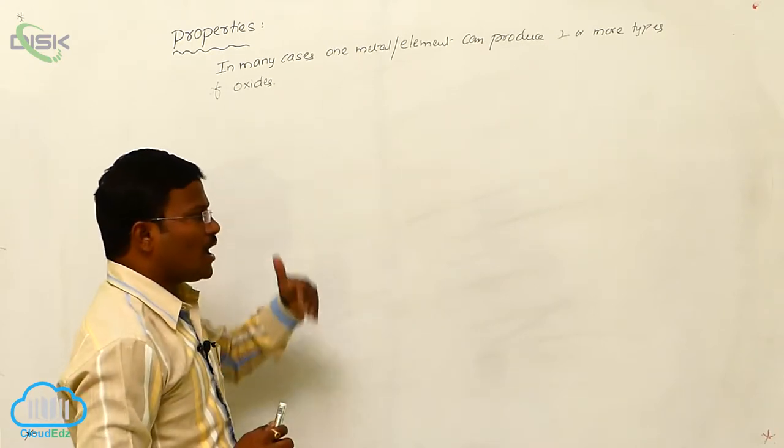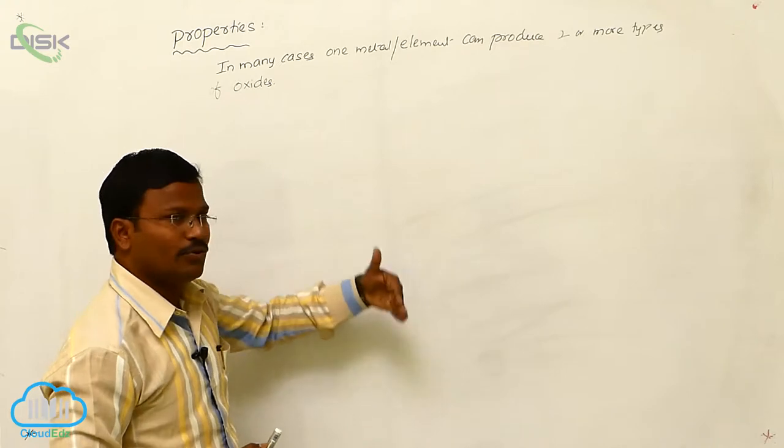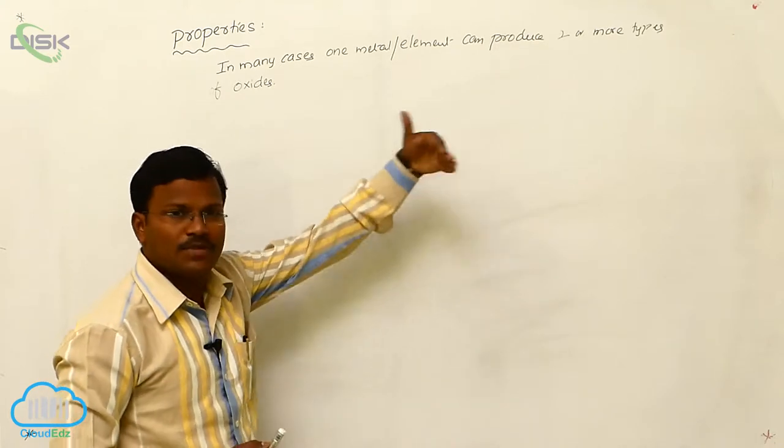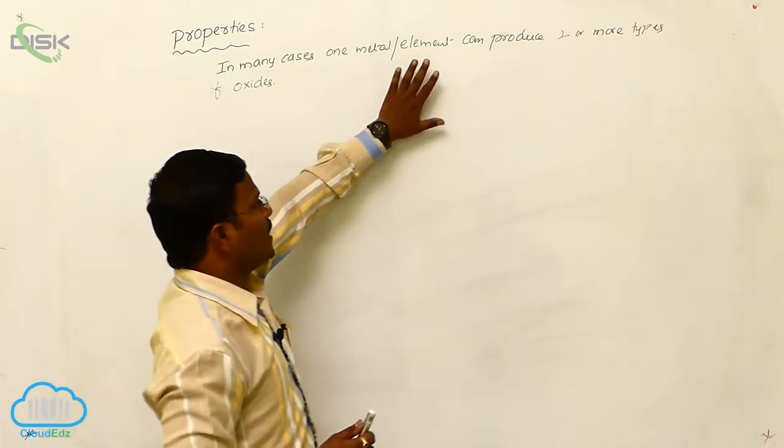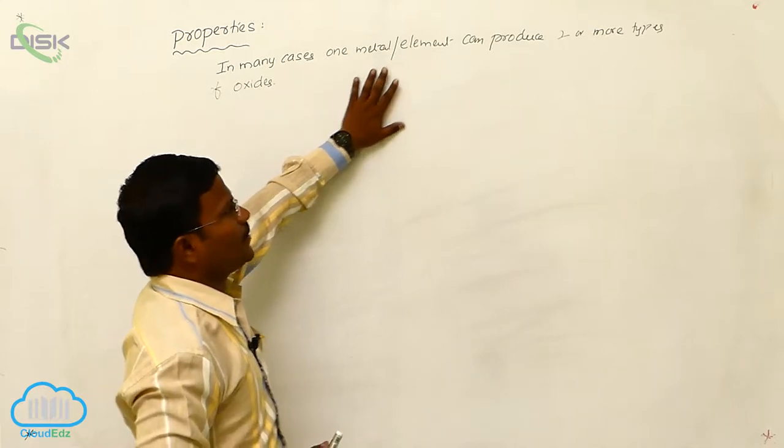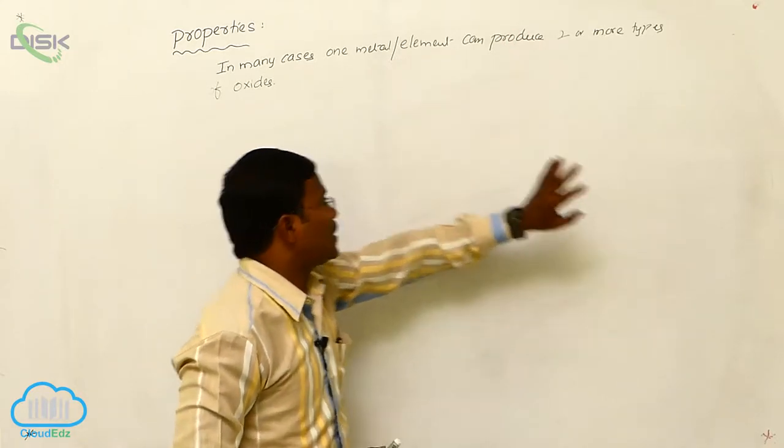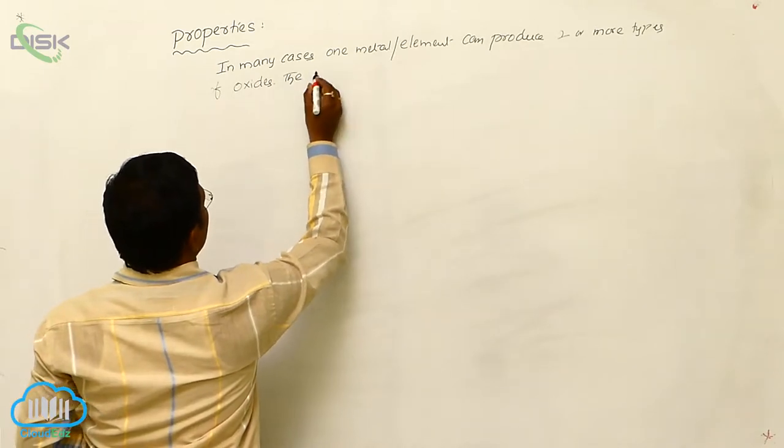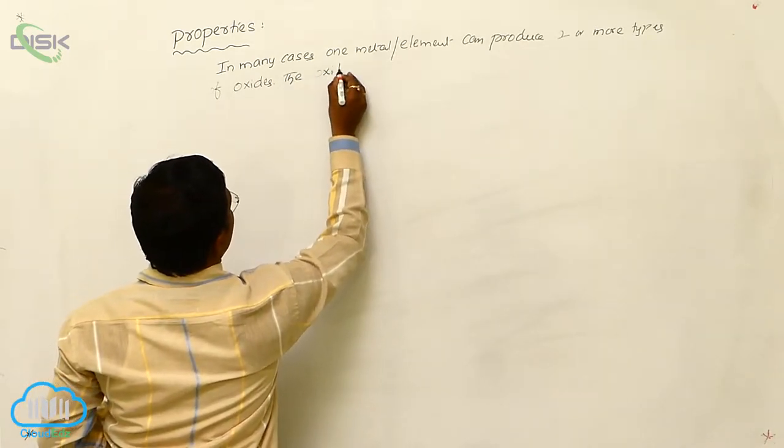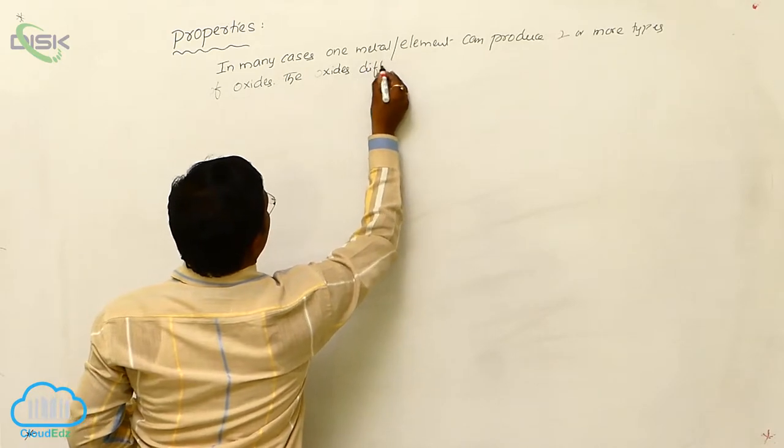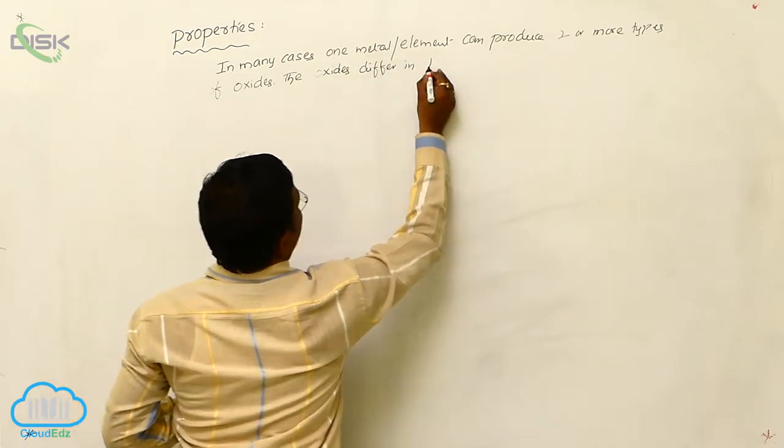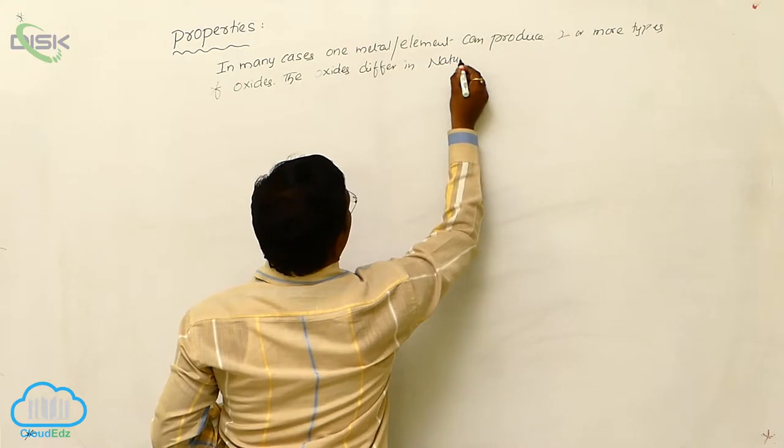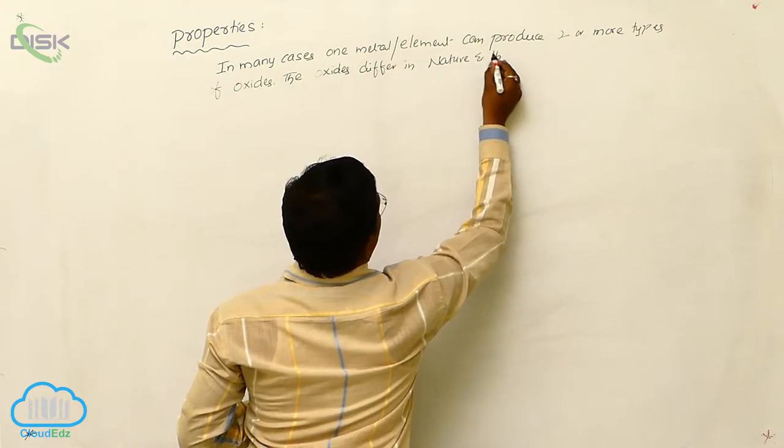nitrogen by reacting with oxygen can produce nearly six types of oxides. Similarly, sulfur also reacts with oxygen and produces three or two types of oxides. Like this, a single element or single metal can produce two or more types of oxides. These oxides differ in nature and their properties.